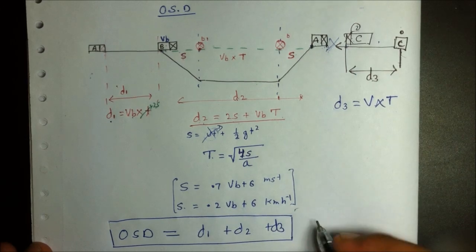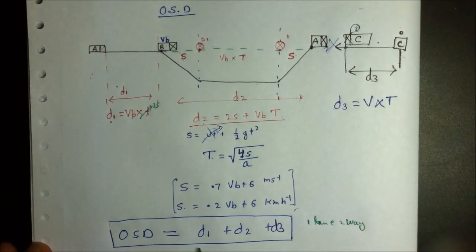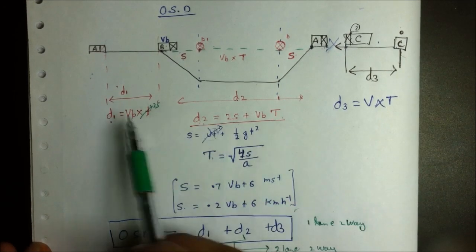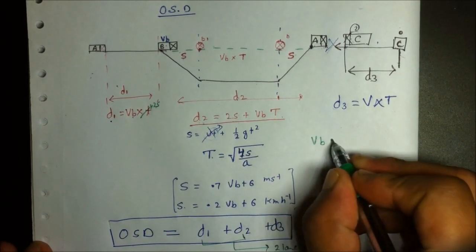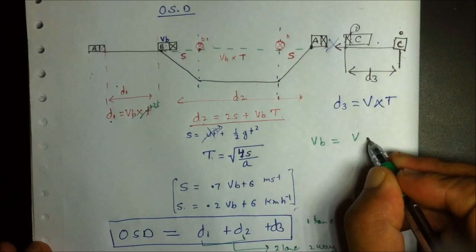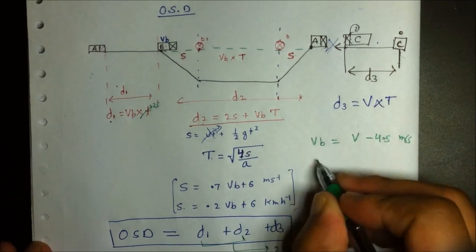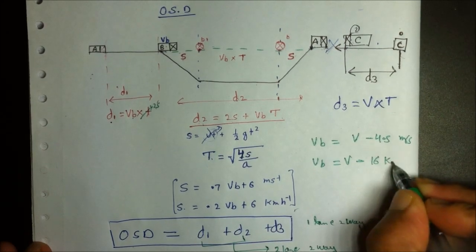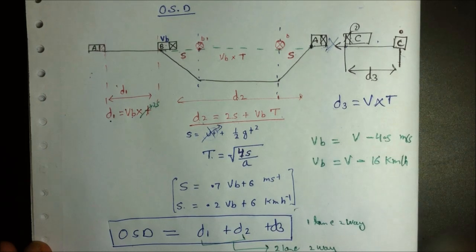The overtaking sight distance equals D1 plus D2 plus D3 for a one-lane two-way road, and D1 plus D2 for a two-lane two-way road. VB (velocity of overtaken vehicle B) equals the design velocity V minus 4.5 in meters per second, or V minus 16 in kilometers per hour.